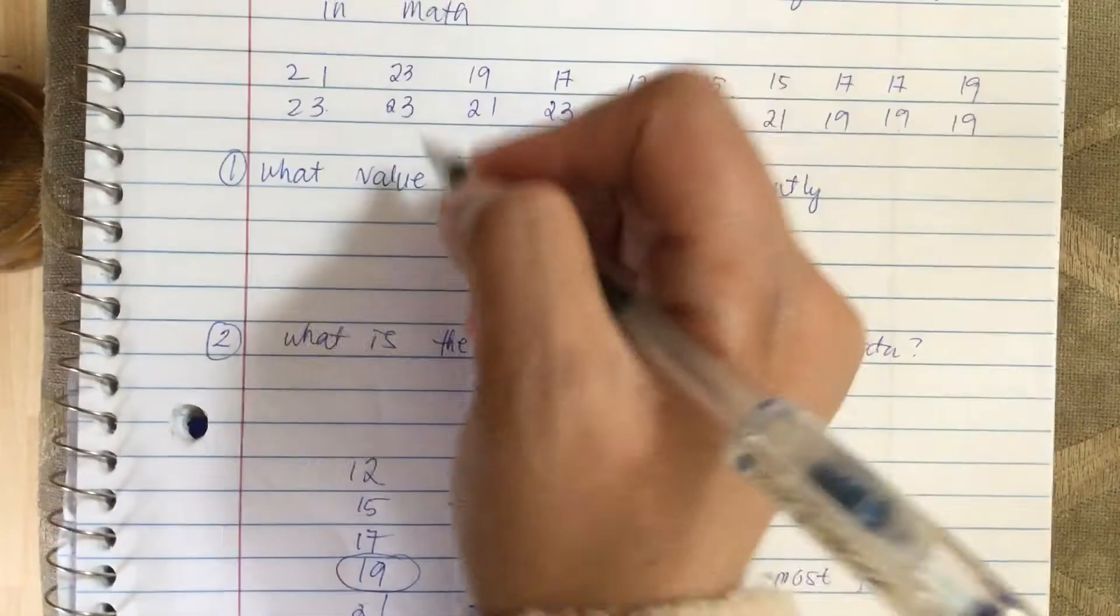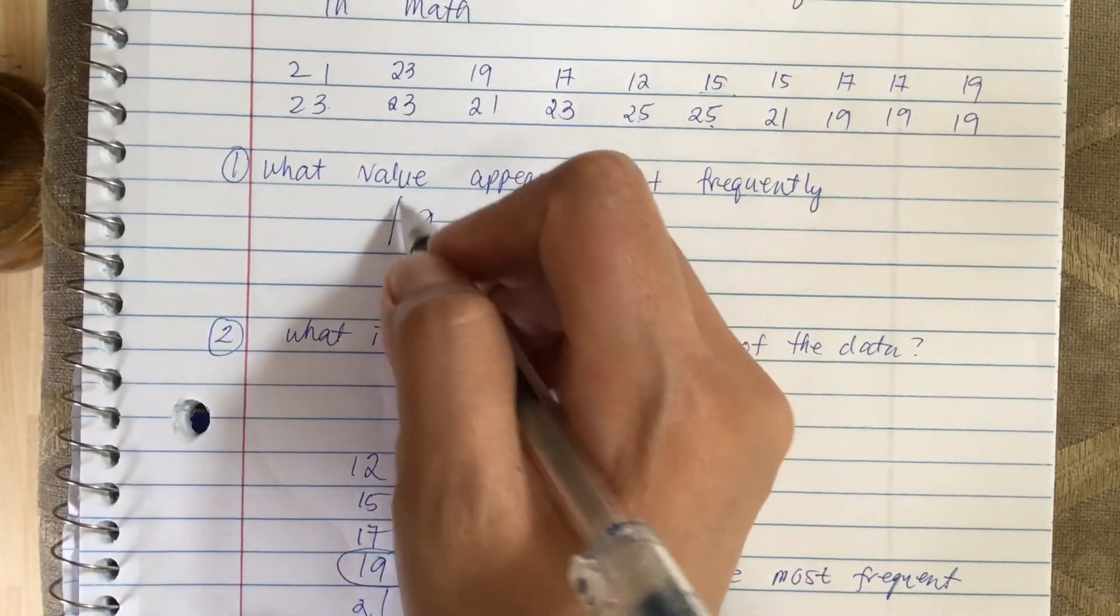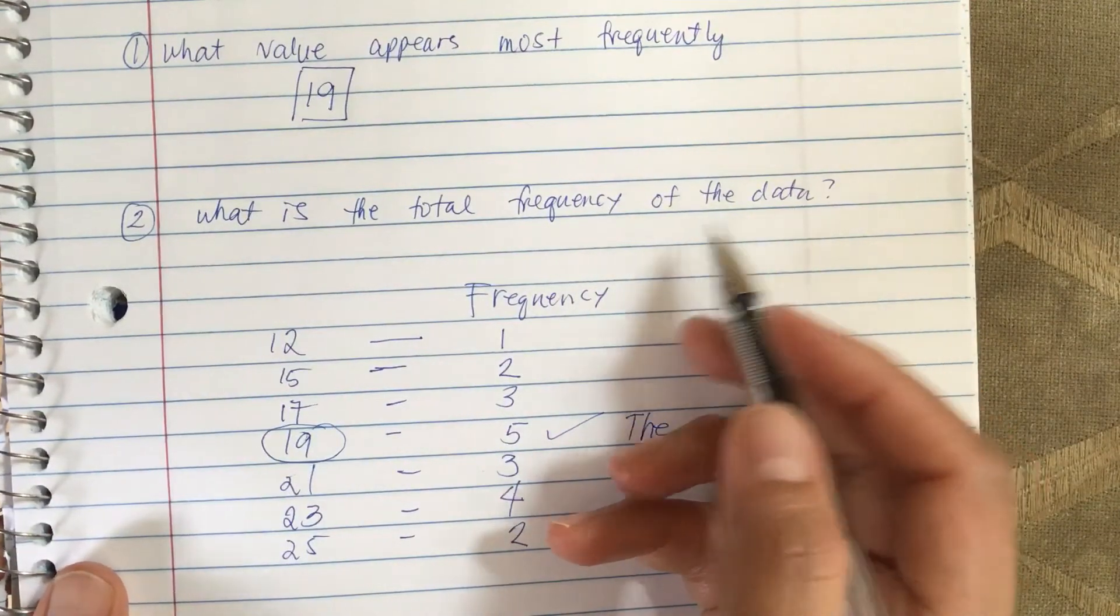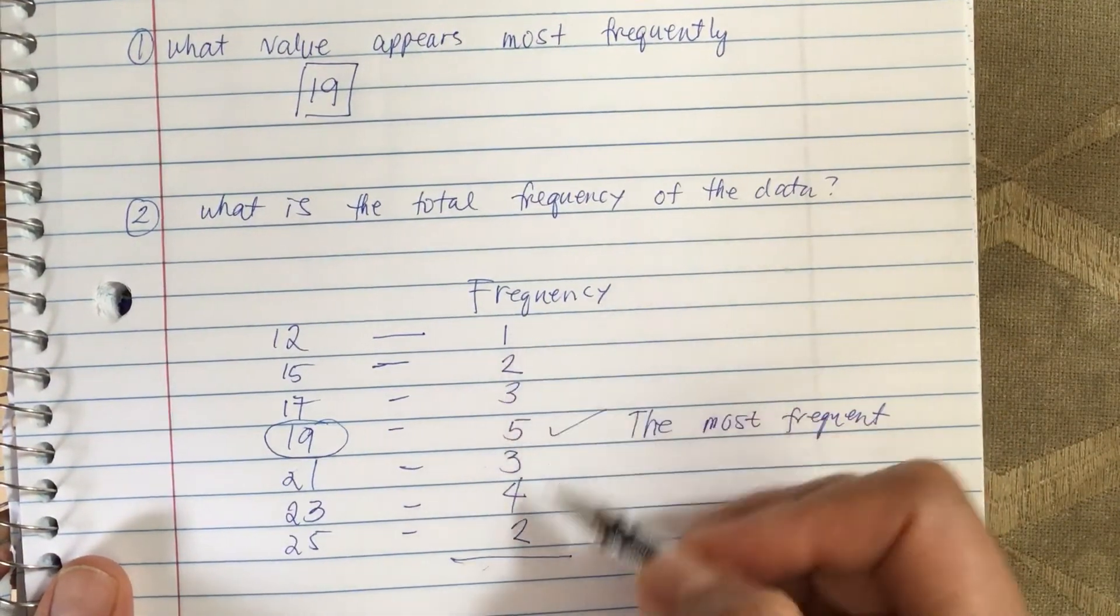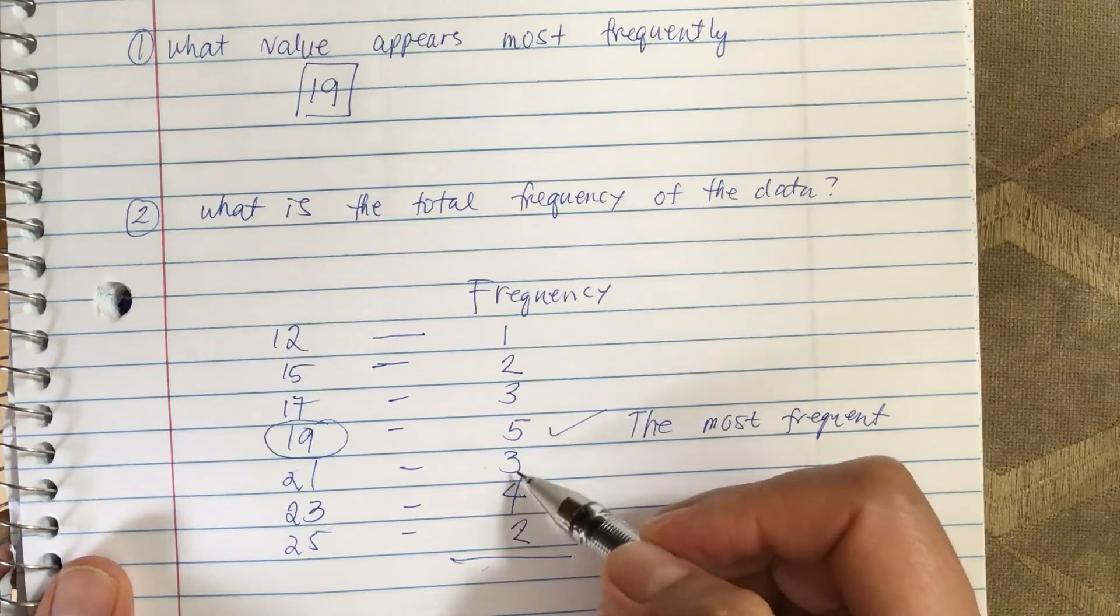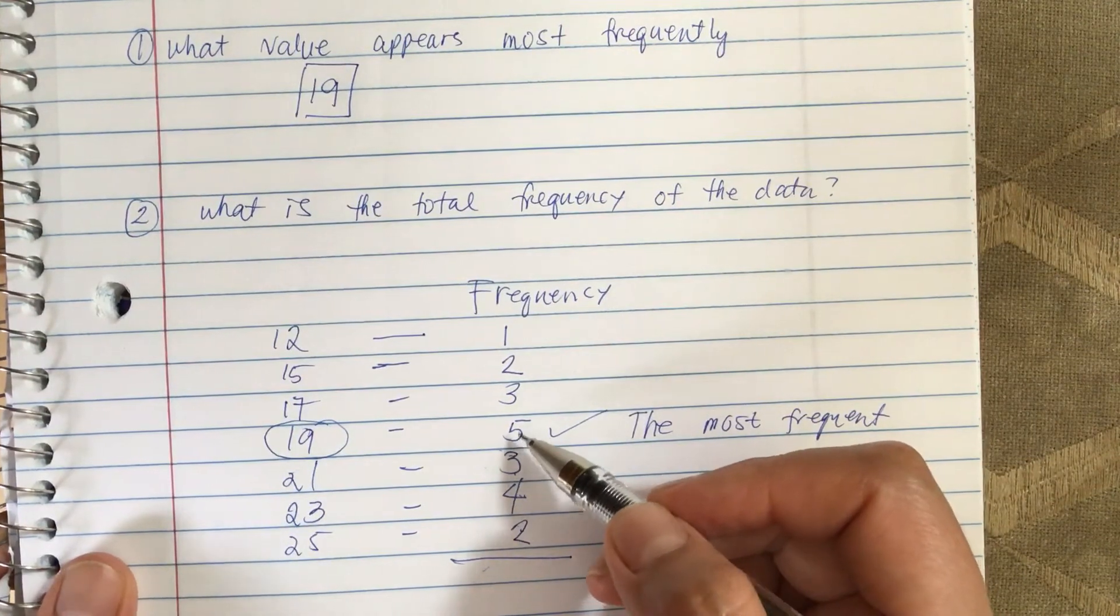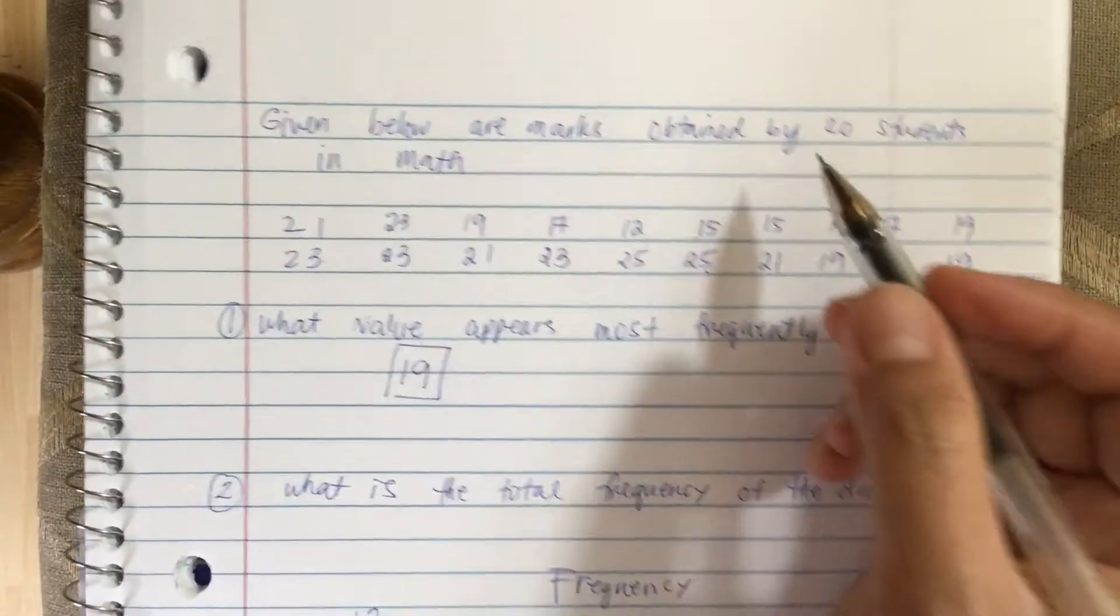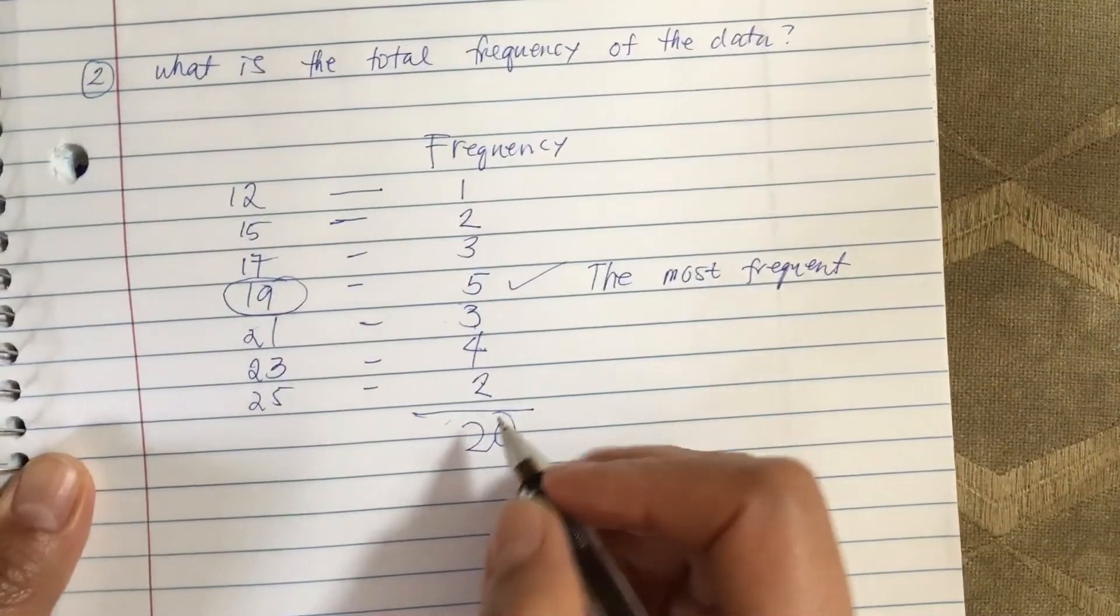What is the total frequency of the data? So total of the frequency is one plus two is three, plus three is six, plus five is eleven, plus three is fourteen, plus four is eighteen, plus two is twenty. And they told us it's 20, so 20 is the total.